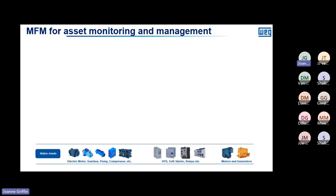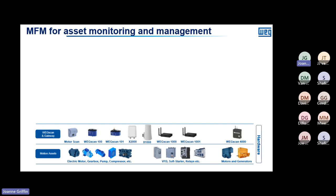The next slide shows how the solution is organised. At the asset level, you have electric motors, gearboxes, pumps, compressors, or whatever assets you'd like to monitor. At the sensor level, you install sensors on your assets: the MotorScan sensor, the WixCAN 100, the WixCAN 101, and the WixCAN data sensor. We also have the X2000 gateway and X1000 gateway. The WixCAN 1000 and 4000 are for monitoring motors and gearboxes respectively. These sensors send data to the IoT platform.